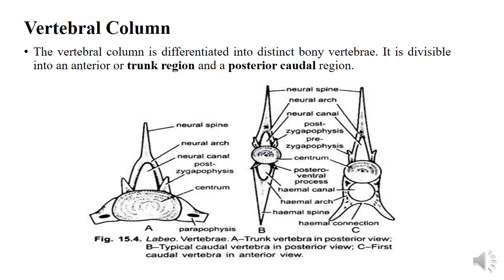Below is the diagram of both these regions, which includes the neural spine, neural arc, neural canal, postzygapophysis, zygapophysis, centrum, hemal canal, hemal arch, hemal spine, and hemal connection.